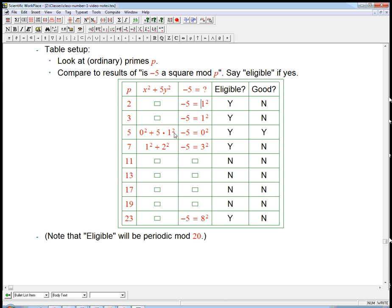Here, 5, of course, minus 5 is congruent to 0, because it's a multiple of 5. And here it's not hard to verify that mod 7 minus 5 is congruent to 9, congruent to 3 squared.